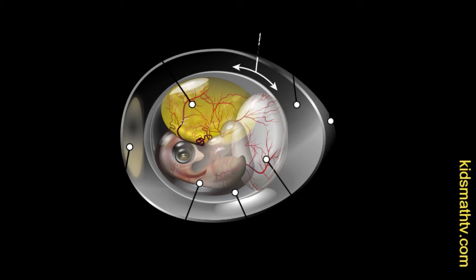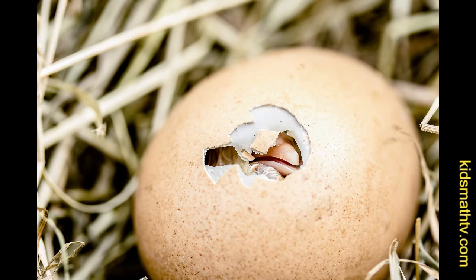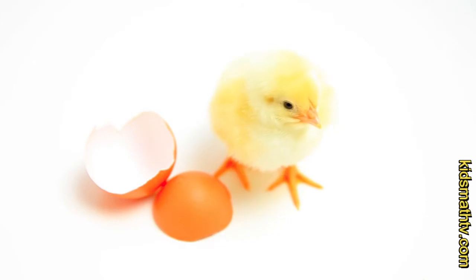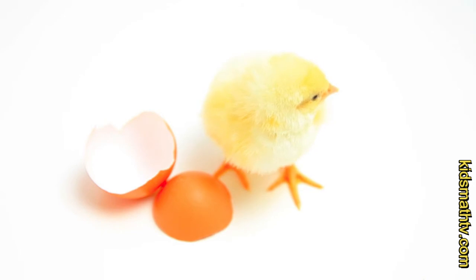On about day 19 of the incubation period, chicks begin a process referred to as pipping. It involves the young chicks using their small tooth to peck a hole through the eggshell to facilitate oxygen intake. This hole will eventually serve as the exit through which the chick will emerge on day 21. Chicks come out with wet feathers that eventually dry up and become fluffy. Most young chicks from day 1 can move about. The mother hen occasionally covers its chicks under its wings to keep them safe and warm.